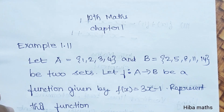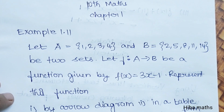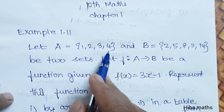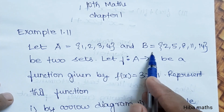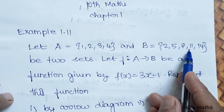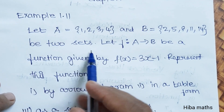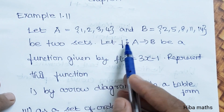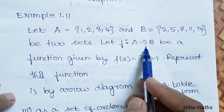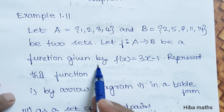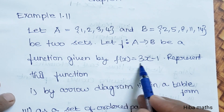Hello students, welcome to Hibamax 10 Standard Max Chapter 1 Example 1.11. Let A equal to {1, 2, 3, 4} and B equal to {2, 5, 8, 11, 14} be two sets. Let F be a function from A to B given by F of X.